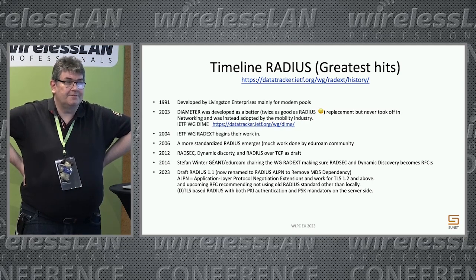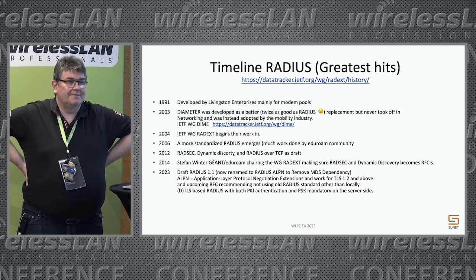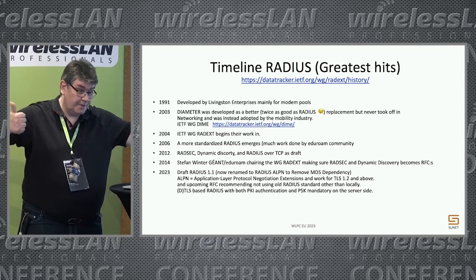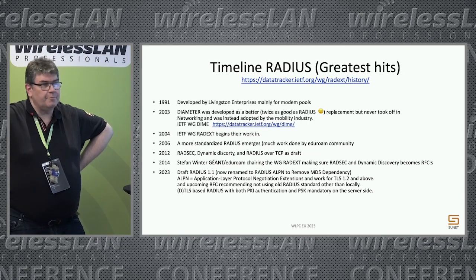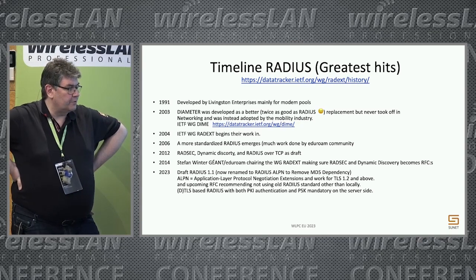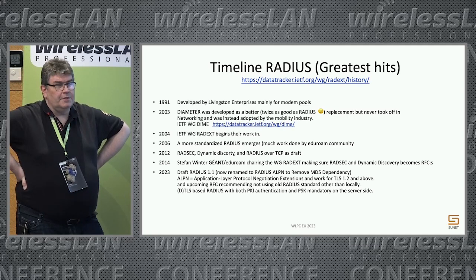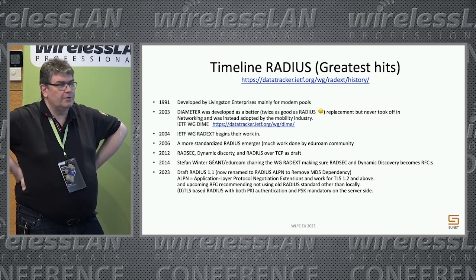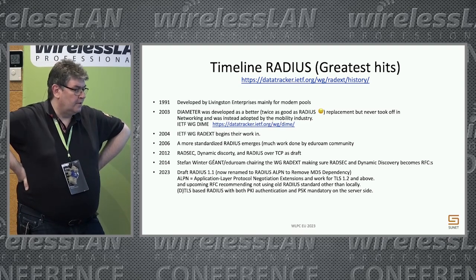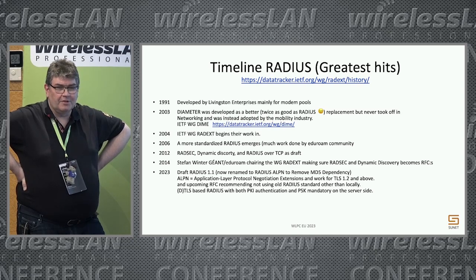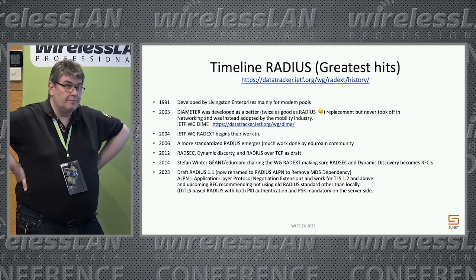RADIUS started in 1991 - those were the days. As I mentioned, Diameter was developed to be twice as good. But for some reason it never really happened in the network world. The mobile industry was very quick to adopt it, but we didn't. It was maybe due to the fact that manufacturers of networking equipment - wireless, switches, and stuff like that - were stuck with their implementation and didn't want to change, because Diameter had actually solved most of the issues with RADIUS.